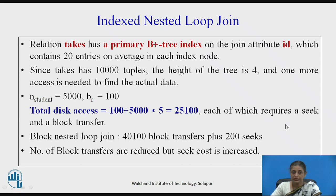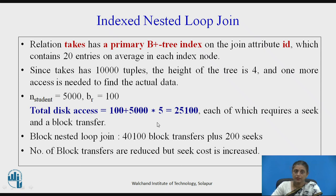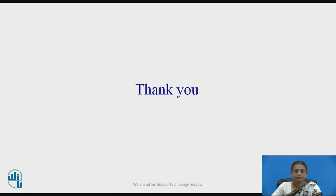Each of these operations requires one seek and one block transfer. Comparing this to block nested loop join, which required 40100 block transfers plus 200 seek operations, the index nested loop join requires 25100 disk accesses, each with one block transfer and one seek. I hope you have understood how to use index nested loop join and how to find its cost. Thank you.